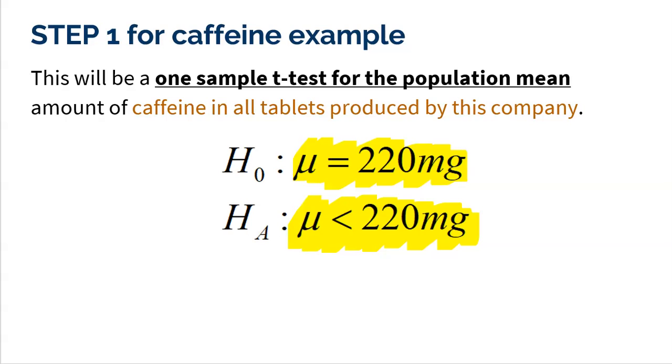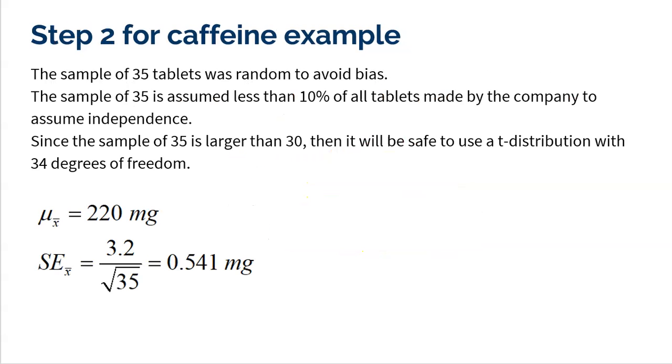So our sample did come back in 218 milligrams, but that could just be because the samples vary, or that could be because the true population mean really is less than 220 milligrams. Alright, let's go ahead and move on to step two.